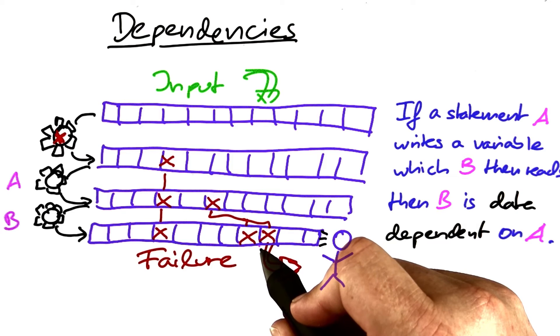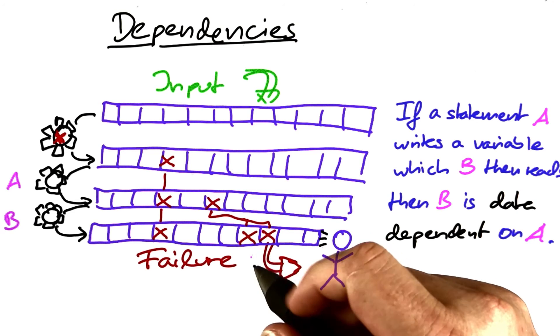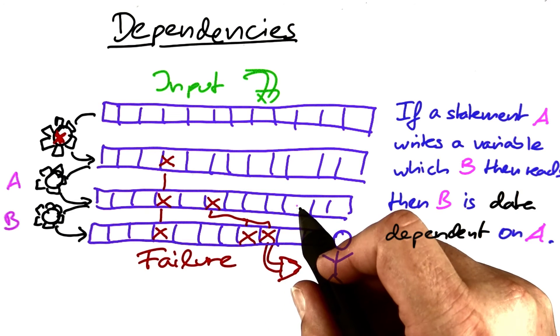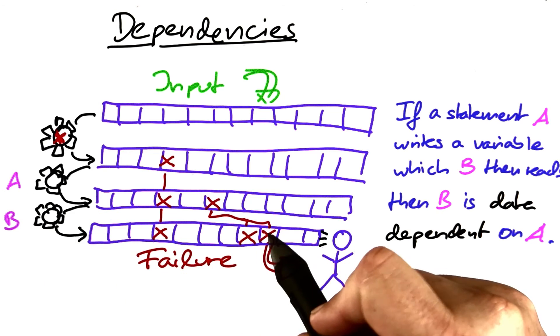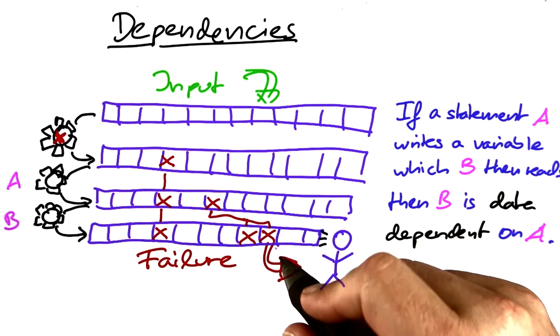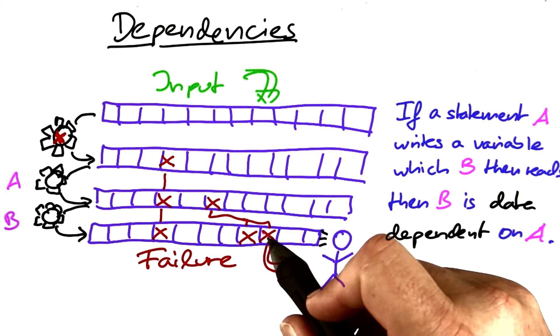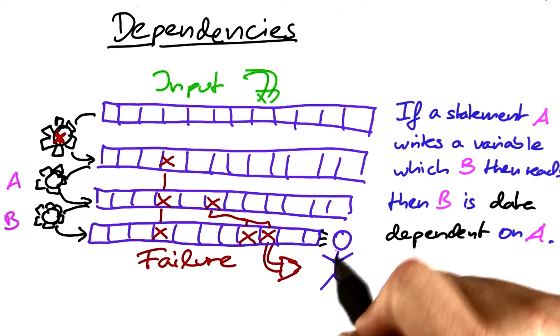This concept of data dependency allows us to trace back the possible locations in the state as well as the statements that cause them back within the program execution and therefore to isolate the possible causes for an infection and later the failure.